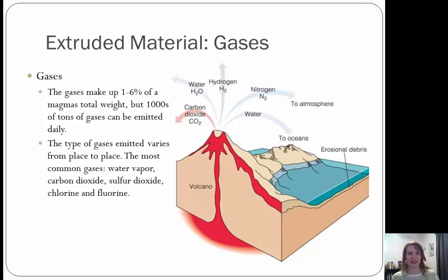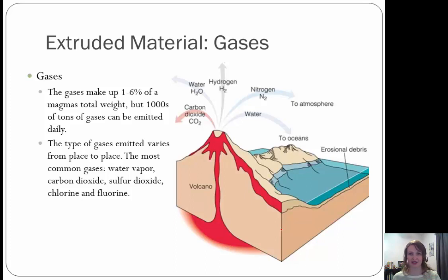Talking about extruded materials — first, gases. Gases make up about 1–6% of a magma's total weight, but thousands of tons of gases can be emitted daily. The type of gases emitted varies from place to place. Most common are water vapor, carbon dioxide, sulfur dioxide, chlorine, and fluorine, and some nitrogen is also released. The role of gases in an eruption: they add mobility, help the lava and magma move, and can create more explosive eruptions.